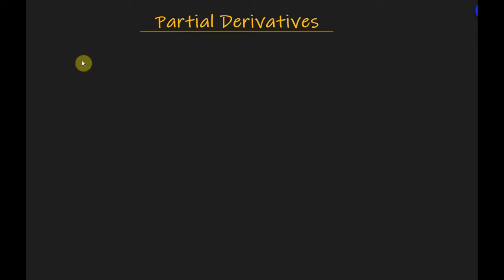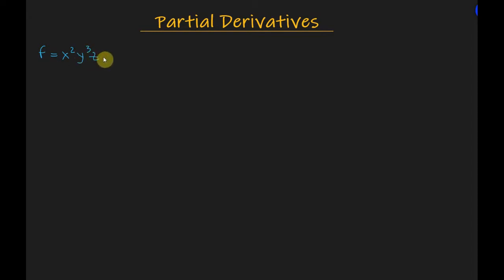Let's do a partial derivative of this function. f is equal to x squared y cubed z plus 3x cubed y plus cosine z.